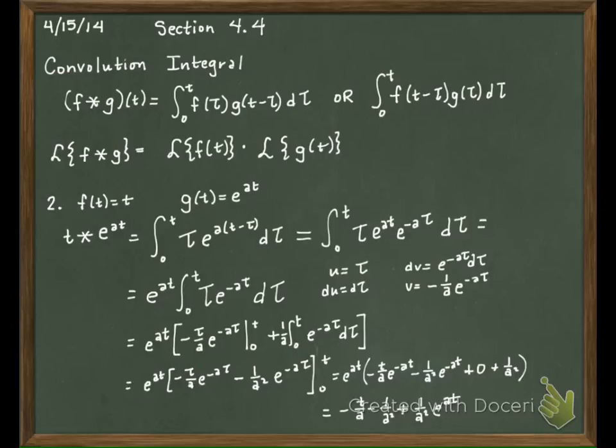Now, we could have worked it this way. Let me show you another way we could have gotten the same answer. Remember that I told you the Laplace of a convolution is just the product of the separate Laplace transforms. So I took the Laplace of F multiplied by the Laplace of G.